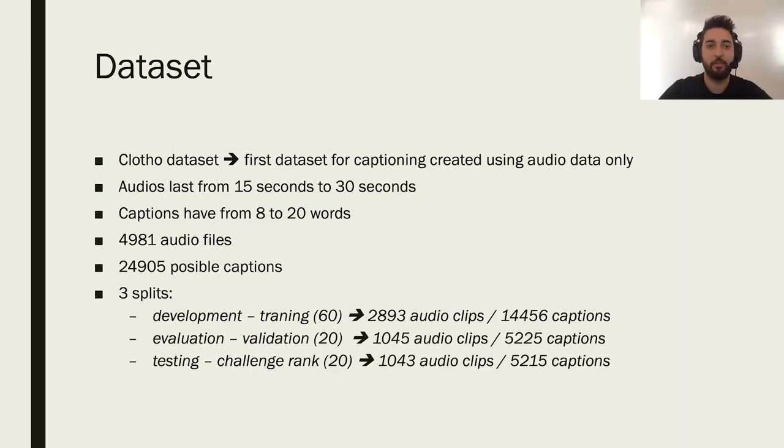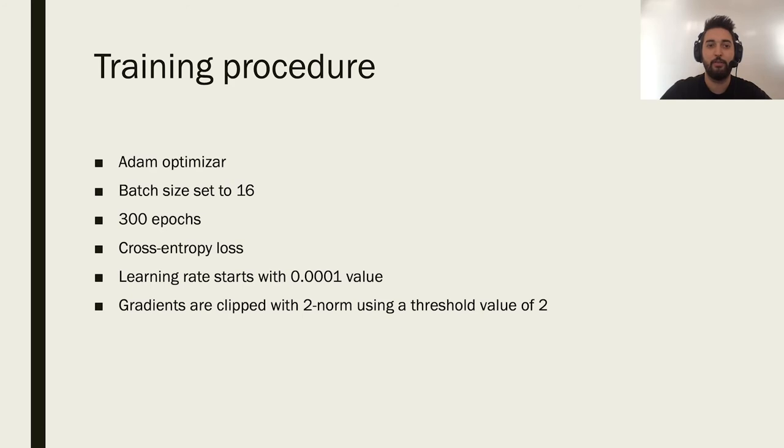The dataset used for this task is the one known as Clotho dataset. This one is the only dataset whose manual captions have been obtained through audio data. Therefore, an automated audio captioning system that uses this dataset is trying to imitate the behavior of human ear and the generation of captions through language processing. The audios have a variable duration. The shortest audio has a duration of 15 seconds and the longest 30 seconds. The manual captions have a variable length between 8 and 20 words each one. There are a total of 4,981 audio clips and 24,905 captions that are divided into three splits.